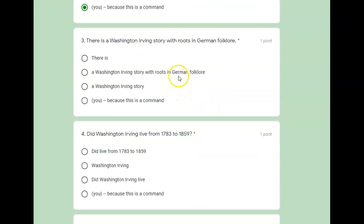Number three, there is a Washington Irving story with roots in German folklore. And again, we're looking for the complete subject. So who or what is the sentence about? This Washington Irving story. And there is would be part of the predicate. So we need the complete subject. So everything dealing with that Washington Irving story. So a Washington Irving story with roots in German folklore. So everything from A to folklore would count for the complete subject.